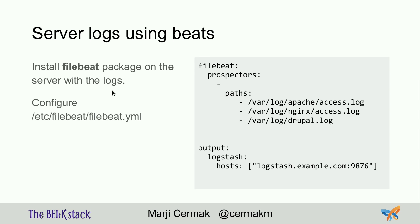How did I get logs into the central log instance? I just installed the Filebeat package — it's available as RPM or DEB. I configured it by saying stream these paths to this Logstash. I would also use TLS certificates in production, but this is just to show how quickly it's possible. Install Filebeat and stream logs from those files to the Logstash server.